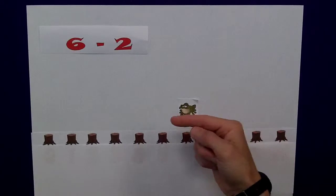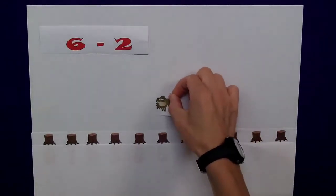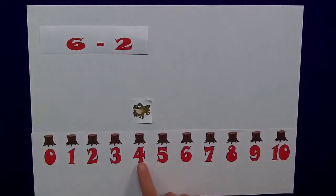Now, remembering that Freddie is jumping this way, 1, 2, and we end up at 4.